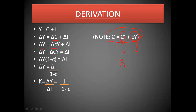Taking ΔY common, the equation becomes: (1 − c) · ΔY = ΔI. Rearranging: ΔY = ΔI / (1 − c). Here, 1 − c is nothing but the marginal propensity to save (s). And the ratio of change in income to change in investment is K, the multiplier: K = ΔY/ΔI = 1/(1−c) = 1/s.